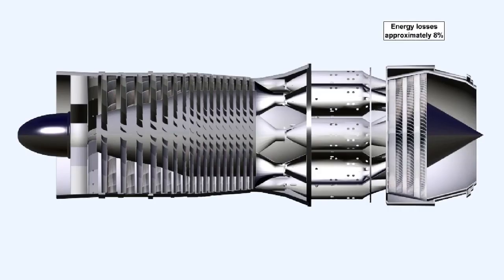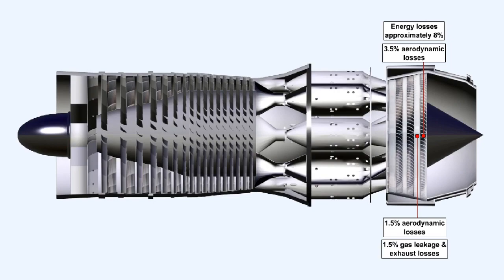The turbine is a very efficient mechanical device. Nevertheless, it does suffer losses during its operation. On average, the energy loss in the turbine is about eight percent. This eight percent is comprised of approximately 3.5 percent from aerodynamic losses in the turbine blades and 1.5 percent aerodynamic losses in the nozzle guide vanes. The rest is divided fairly equally between gas leakage over the blade tips and exhaust system losses.